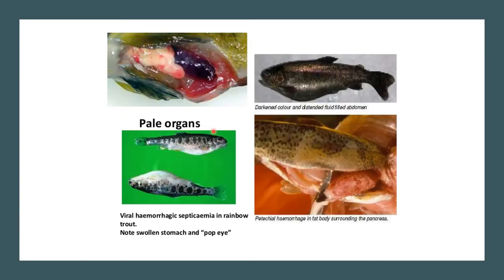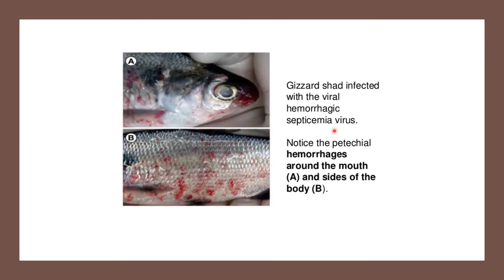Here we see pale organs, darkened coloration, and fluid-filled abdomen. In VHS-infected rainbow trout, note the swollen stomach, pop-eye, and petechial hemorrhages in fat bodies surrounding the pancreas. In gizzard shad infected with VHS, notice the ecchymotic hemorrhages around the mouth and on the sides of the body.